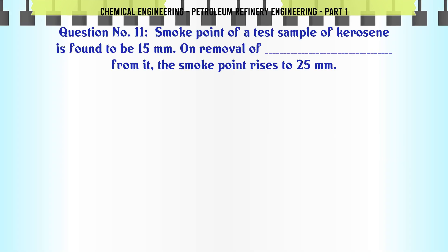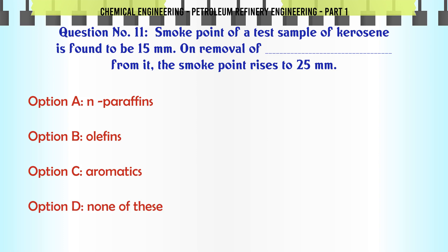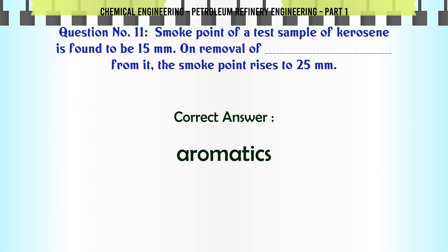Smoke point of a test sample of kerosene is found to be 15 mm. On removal of aromatics from it, the smoke point rises to 25 mm. A. N-Paraffins, B. Olefins, C. Aromatics, D. None of these. The correct answer is Aromatics.